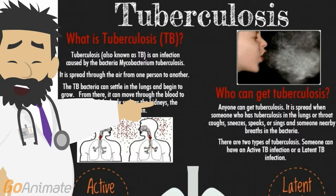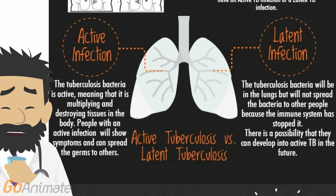There are two types of tuberculosis: someone can have an active TB infection or a latent TB infection. Now listen up. I'm gonna explain the difference. When it's active, the tuberculosis is multiplying and destroying tissues in the body.